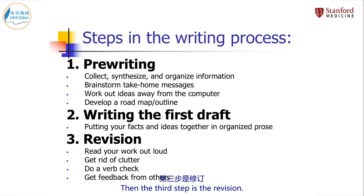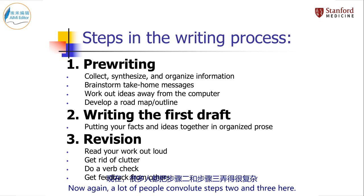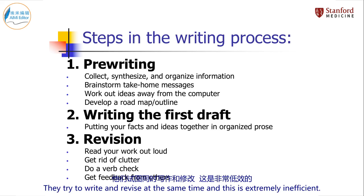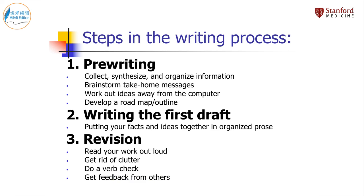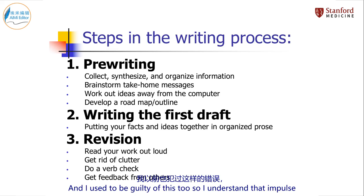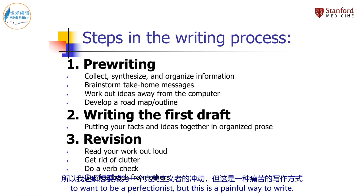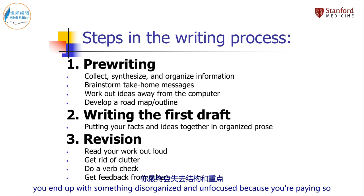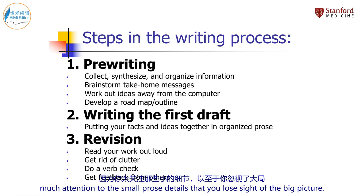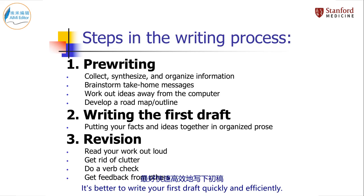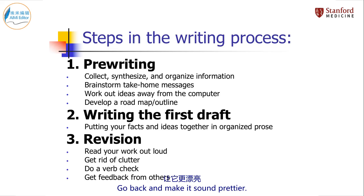Then the third step is the revision. After you've written a first draft, you go back and revise it to make it sound better. Again, a lot of people convolute steps two and three — they try to write and revise at the same time, and this is extremely inefficient. A lot of students tell me they can't move on to the next sentence until they get the last sentence perfect. I used to be guilty of this too, so I understand that impulse to be a perfectionist. But this is a painful way to write. It takes forever, and you end up with something disorganized and unfocused because you're paying so much attention to small prose details that you lose sight of the big picture. It's better to write your first draft quickly and efficiently — just get your ideas down — and then go back and revise. Go back and make it sound prettier.